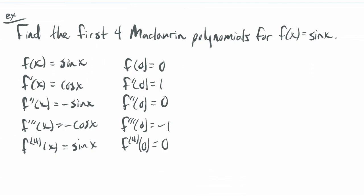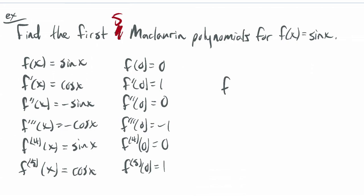Let's do one more term since the pattern is interesting. The fifth derivative of sine x is cosine x, so the fifth derivative evaluated at 0 is 1. The formula for each term is: nth derivative evaluated at 0, over n factorial, times x to the n.